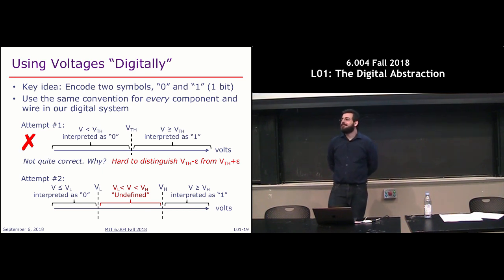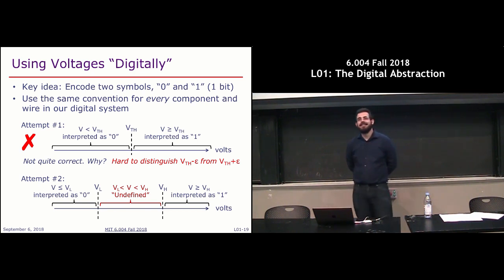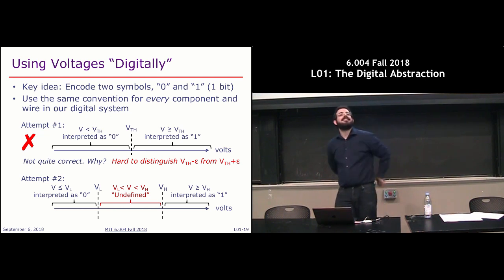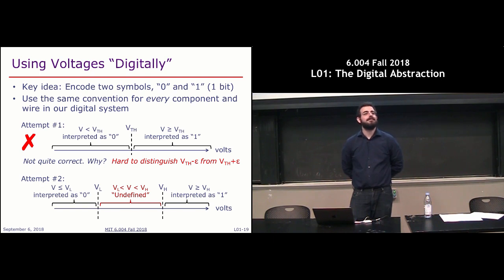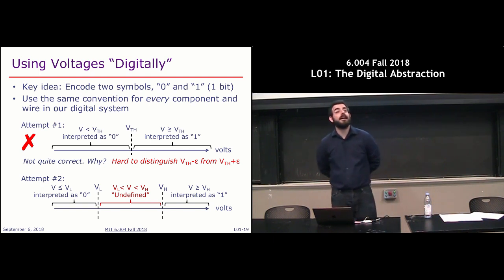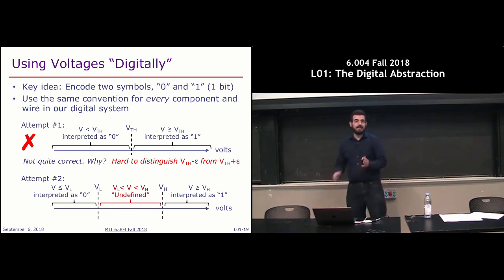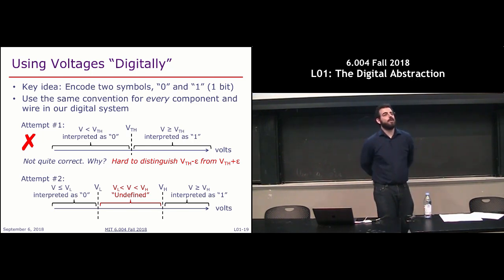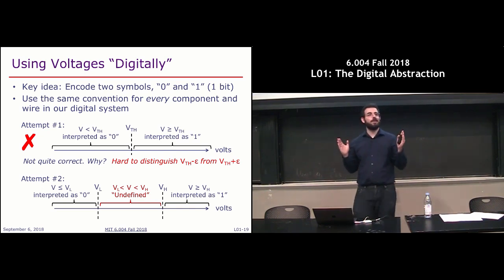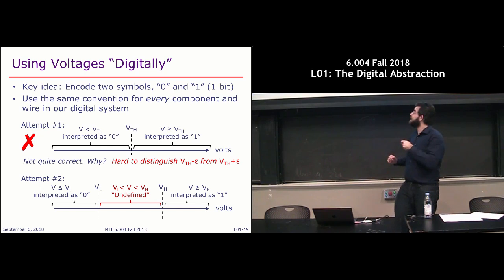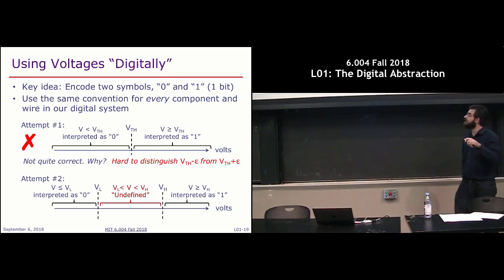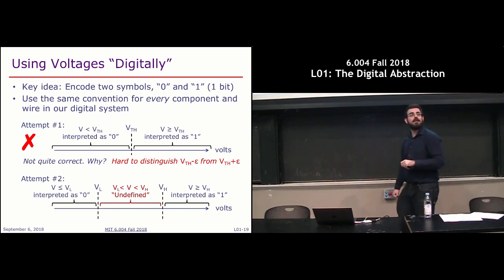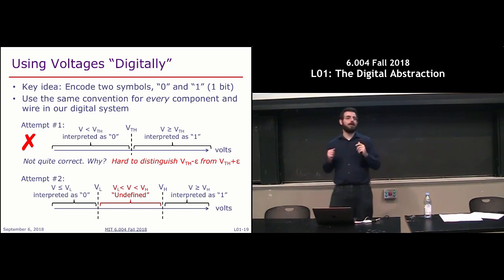Have we solved our problem? We've solved some of the problems. [Student: You need to make sure the gap between VL and VH is bigger than whatever your noise delta is.] Yes — this needs to be larger than whatever level of noise you want to tolerate, otherwise you could start flipping zeros into ones and vice versa. [Student: Don't you still have the same issue where a one gets interpreted as undefined?] Exactly — that is precisely the problem. Even if a device outputs a voltage that is VL minus some epsilon, noise on the wire can push the input above VL into the undefined zone.